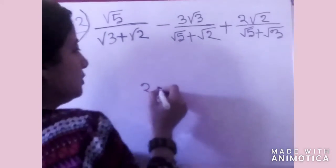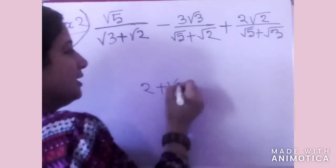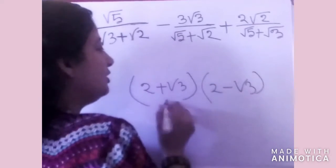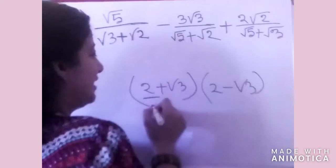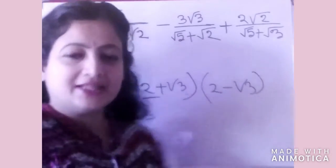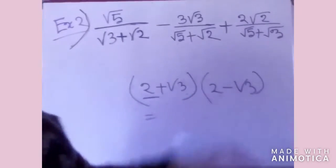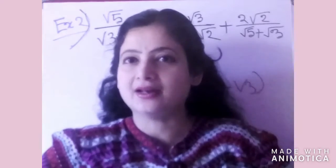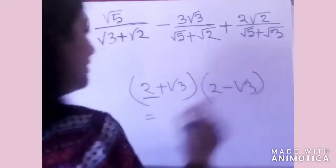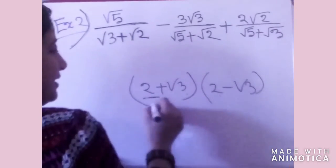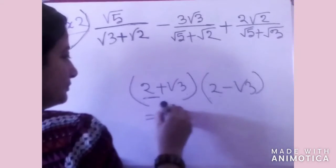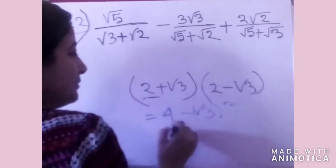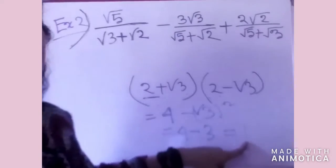For example, if the denominator is 2 plus root 3, then its complementary surd will be 2 minus root 3. What happens here is that 2 plus root 3 is the 'a plus b' form and 2 minus root 3 is the 'a minus b' form. We know that (a + b)(a − b) equals a squared minus b squared. So when we square any root, it becomes rational — 2 squared is 4 and root 3 squared is 3, giving us 4 minus 3, which is 1, a rational number.